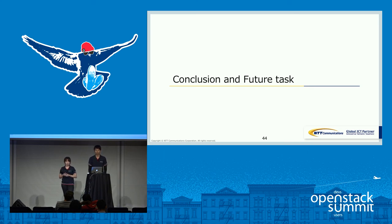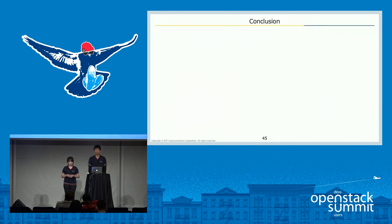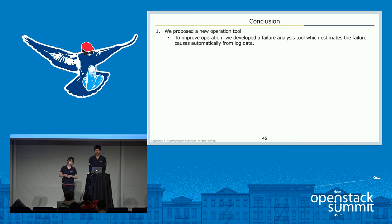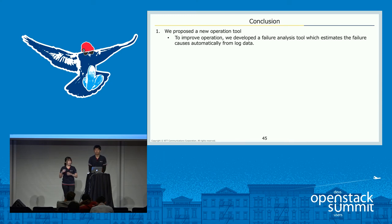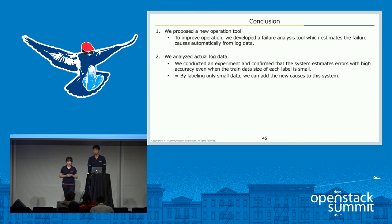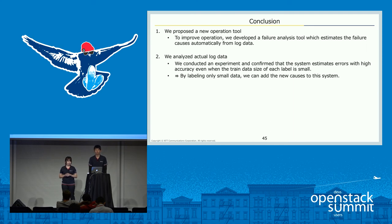Finally, we explain the conclusion and future tasks. We think there are two main contributions. First is the proposition of a new operation tool: we developed a failure analysis tool that automatically estimates failure causes from log data. By using this system, operators can easily know the cause of error and rapidly reply to customer inquiries. The second contribution is the analysis of actual log data — we confirmed that the system estimates errors with high accuracy even when training data size per label is small. This means by labeling only a small amount of data, we can add new causes to the system.